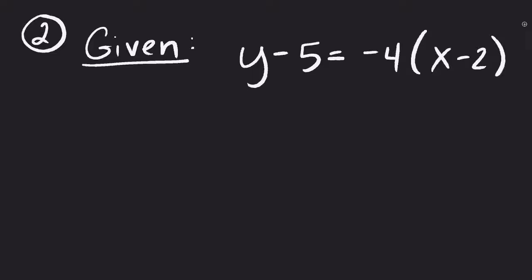We've got a little bit of work ahead of ourselves. We're going to distribute this out, multiplying to both parts. So I still have y minus 5. On this side now I've got negative 4x, because negative 4 times x. And then negative 4 times negative 2 gives me positive 8. So y minus 5 equals negative 4x plus 8.